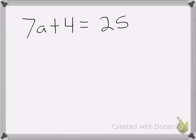Okay, so here I have 7a plus 4 equals 25. In this case, I need to get rid of this plus 4. So the opposite of plus 4 is minus 4. So I'm going to minus 4 from both sides. That cancels out the 4's.